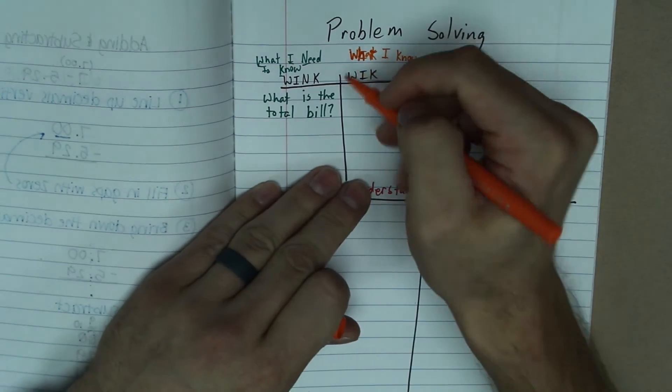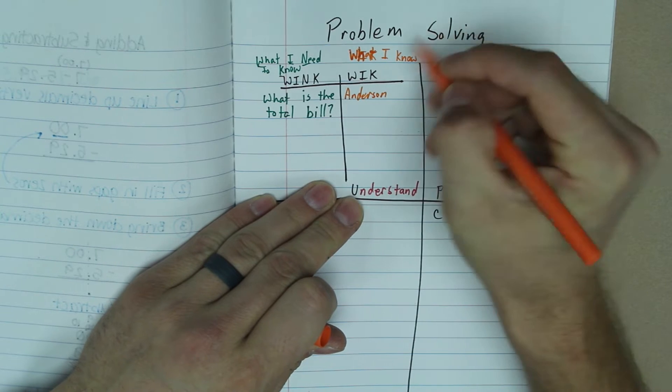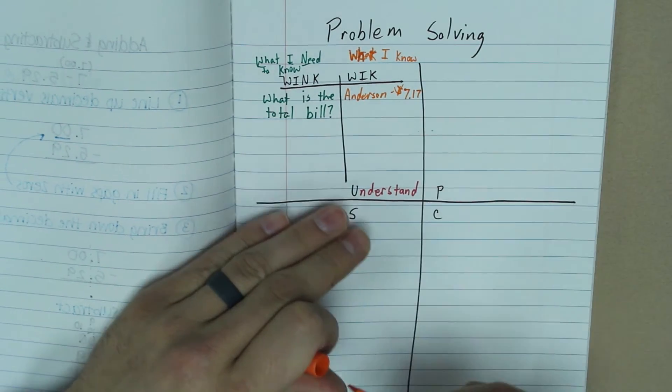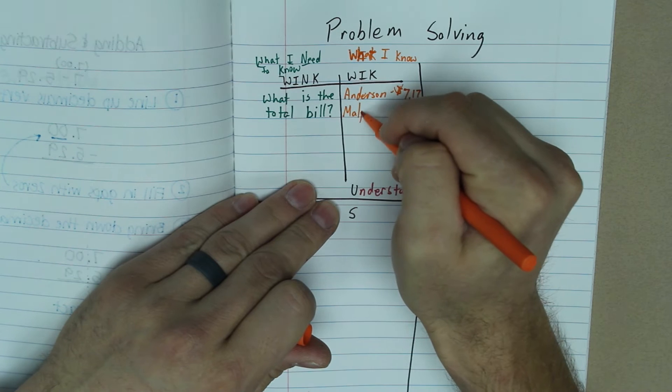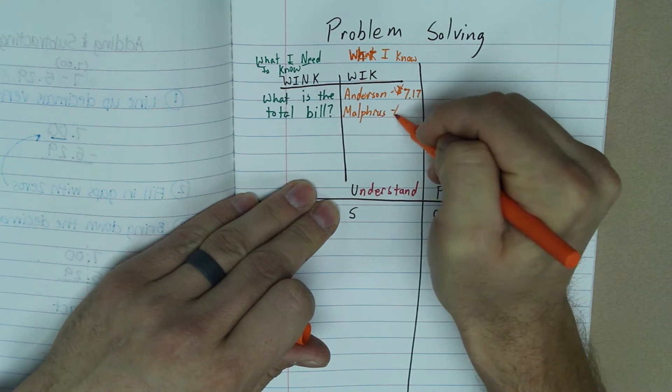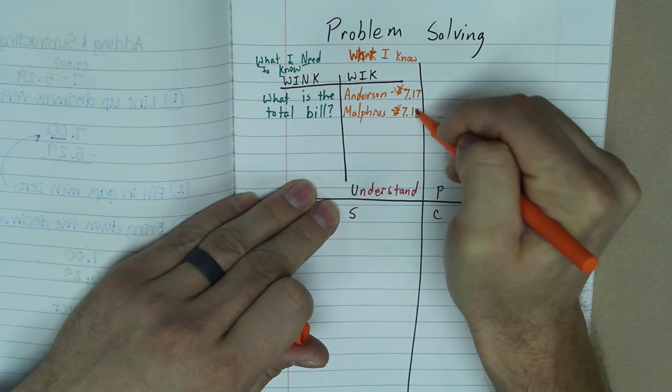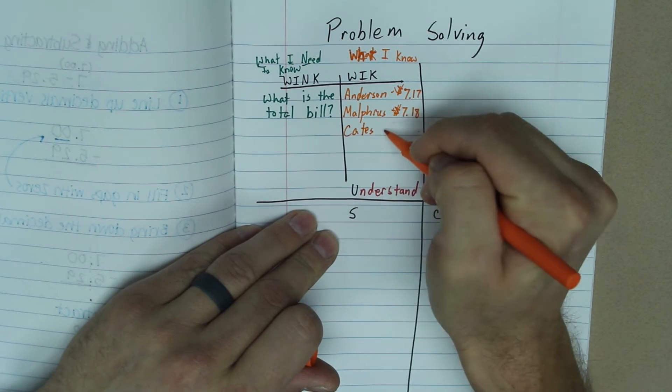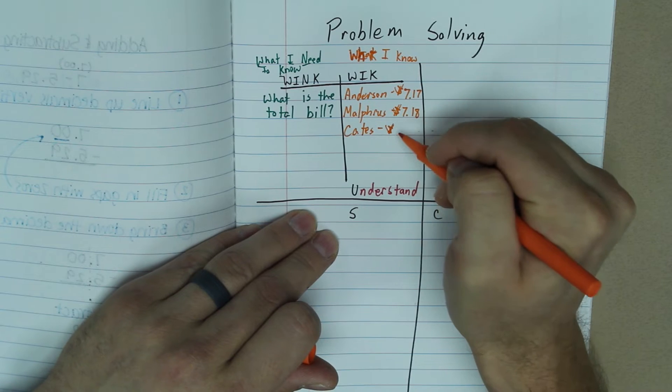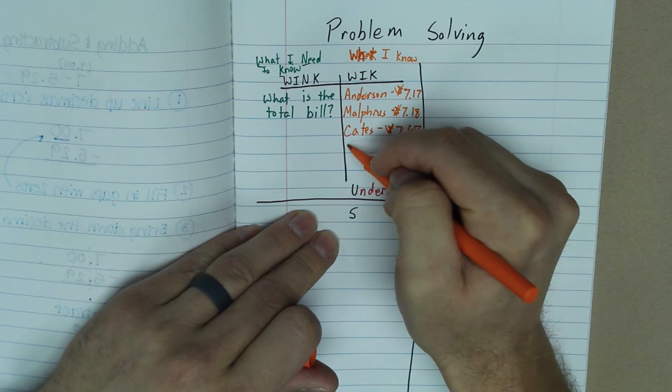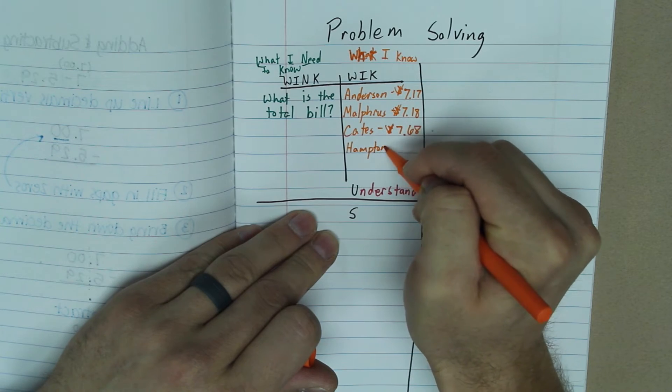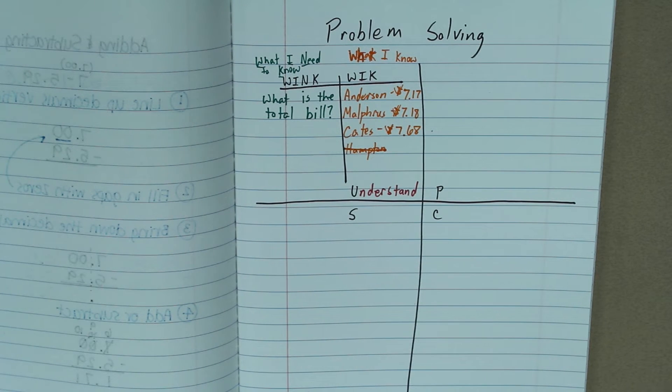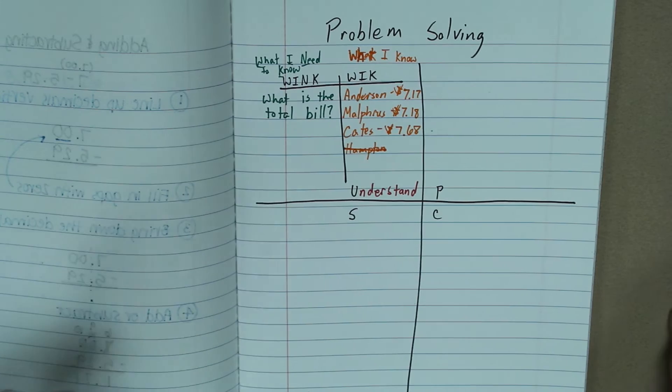And so what do I know? Well, I know that Anderson, that's me. I am buying a chicken sandwich that cost $7.17. I know that Ms. Malifris is buying the same sandwich, which is a penny more. I don't know. I guess she had a one penny me up. I don't know. She's buying a penny more sandwich. And Ms. Cates is buying another sandwich that is $7.68. And Ms. Hampton, she bought pizza last night. So do we need that information? Absolutely not. That is information that Ms. Hampton was trying to trick us with.